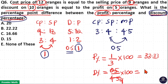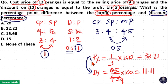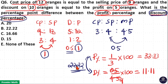The difference between profit percentage and discount percentage is 33.33 minus 11.11, which is equal to 22.22 percentage points. So option B is the answer.